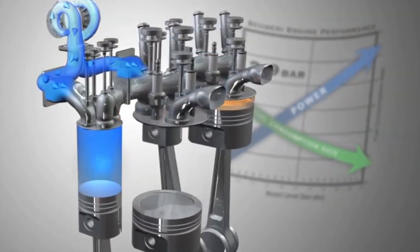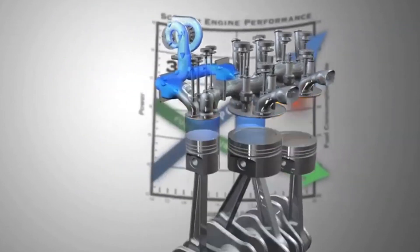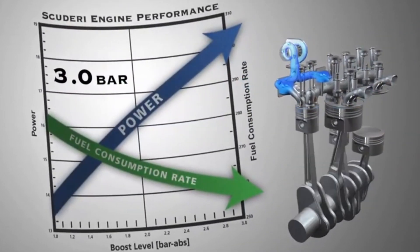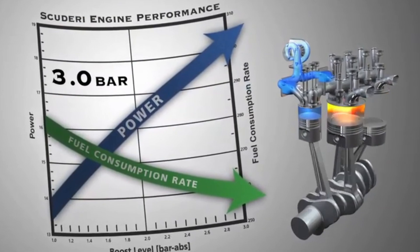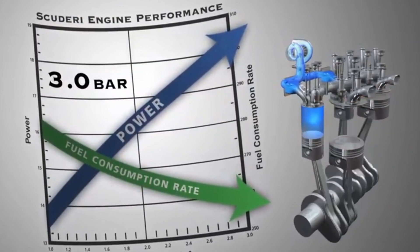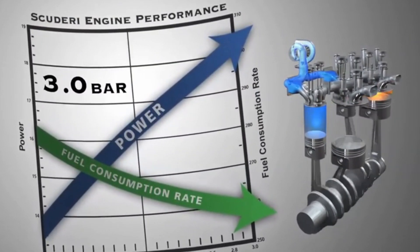In the end, the Scuderi engine relies heavily on the Miller cycle to increase efficiency. By increasing the size of the combustion piston, the combustion cylinder will also get bigger. The inventor of this engine says that this is a more compact way of making a Miller cycle, which should increase specific power output.